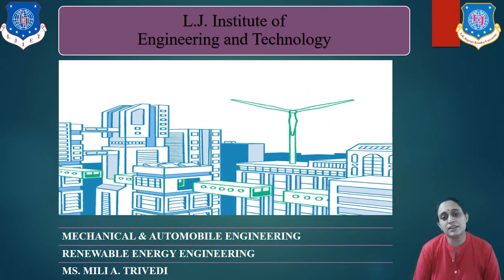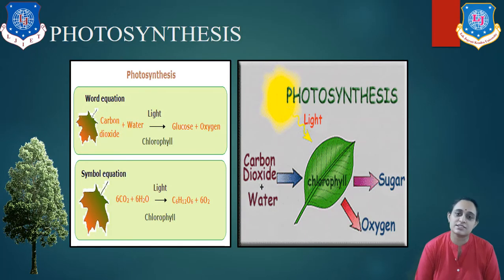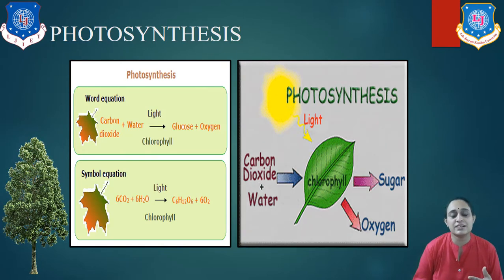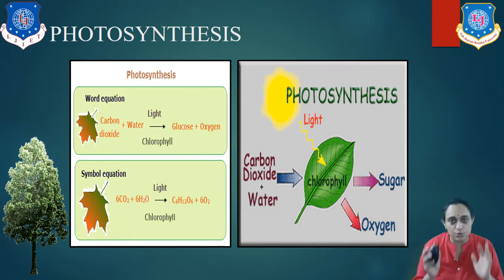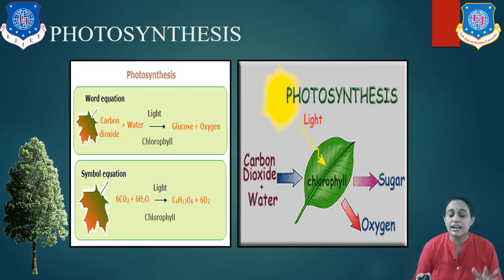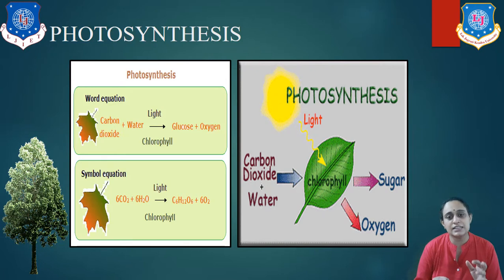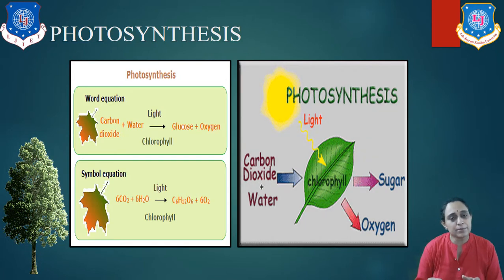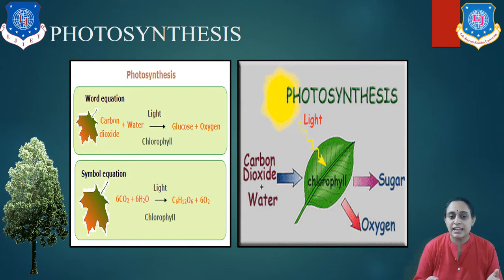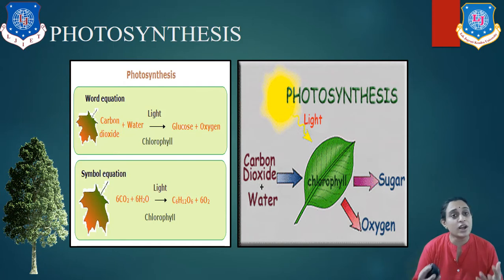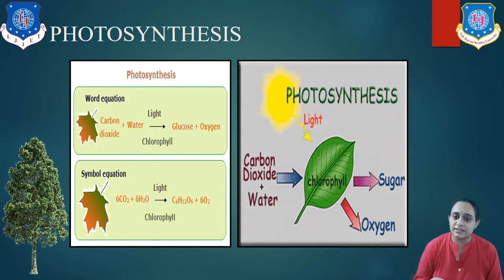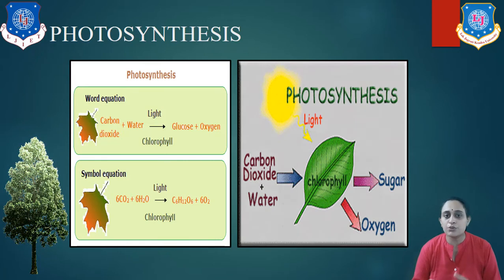Let us first study the very basic theory named photosynthesis. It is generally the chemical reaction by which we get oxygen and trees or plants create food by their own. Photosynthesis is defined as a chemical process taking place in the plant through the interaction of the chlorophyll in the plants and sunlight, by which carbon dioxide and water in the atmosphere are converted into carbohydrates. The plant absorbs carbon dioxide and water from the atmosphere.